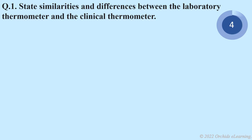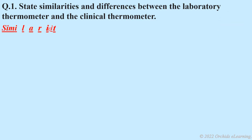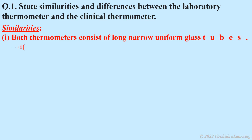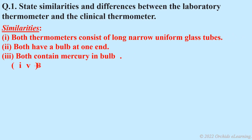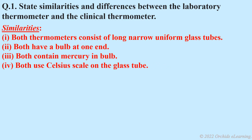Similarities: Both thermometers consist of long, narrow, uniform glass tubes. Both have a bulb at one end. Both contain mercury in the bulb. Both use the Celsius scale on the glass tube.